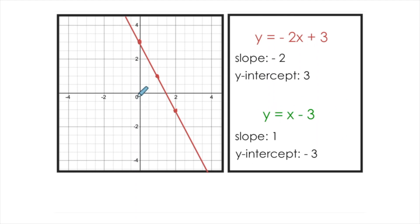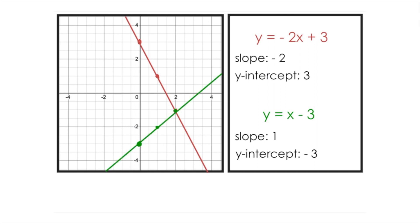Now I'll repeat this process for the second line. With a y-intercept of negative 3, that's down at (0, negative 3). Using a slope of 1, I rise 1 and run 1 to produce another point, and again rise 1 and run 1. You can see that point actually falls on the red point. Connecting those 3 points with a straight line gives us our second line.